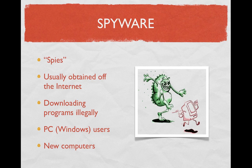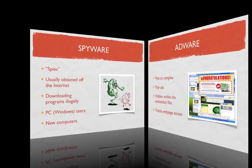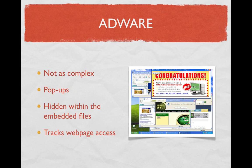Adware is not as complex or complicated as spyware. You could commonly associate adware with pop-ups. You could categorize pop-ups as adware because when you click on ads, somewhere within that embedded file or source code may be some sort of spyware. It may not be a harmful form, but what adware is commonly known for is tracking what kind of webpages you access while on your internet browser. When your browser starts going haywire with pop-ups and you can't stop it, that's mainly because you've been clicking on other websites, which causes these pop-ups to keep appearing based on your past browsing history.